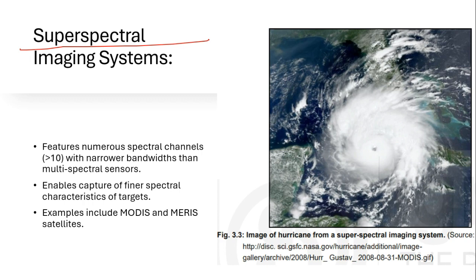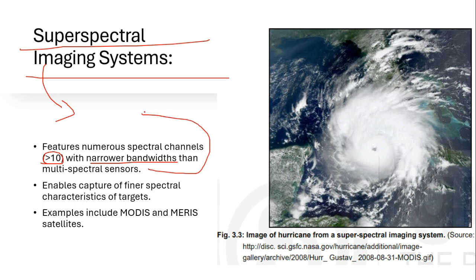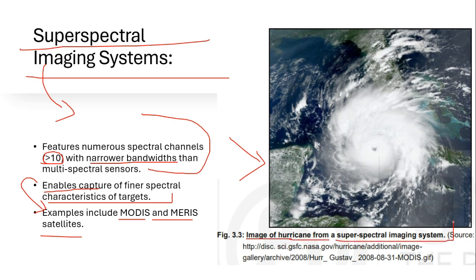There is also a superspectral imaging system, which features numerous spectral channels — greater than 10 — with narrower bandwidth than multispectral sensors, enabling capture of finer spectral characteristics of targets. Examples include MODIS and MERIS satellites. A sample image taken from a superspectral imaging system shows a hurricane captured with this technology.